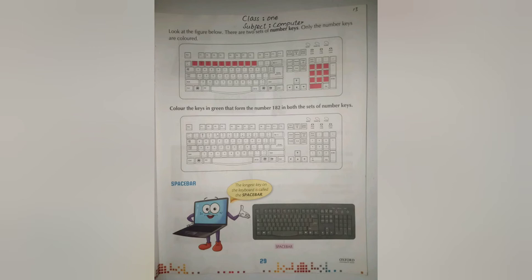If there are numeric keys, then numbers are written on them. The delete key also has a label on it. But the space bar has nothing written on it — it is the longest key. Now let's see how to use the space bar.